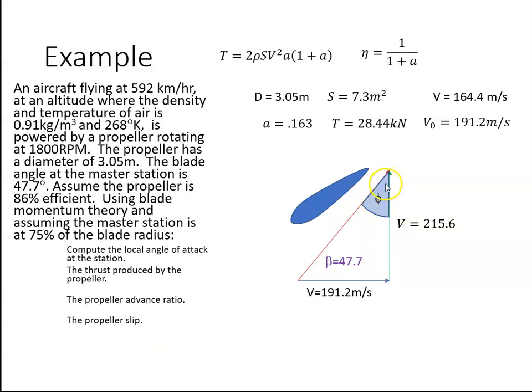I want to calculate the angle of advance, or the helix angle. I can do that from trigonometry: the angle of advance φ is inverse tan of 191.2 over 215.6, which gives me an angle of 41.6 degrees. So if the blade angle is 47.7 and this angle is 41.6, the angle in between them is the angle of attack. So the angle of attack α will be 47.7 minus 41.6. Alpha equals the blade angle minus the angle of advance, which works out to be 6.1 degrees in this instance.